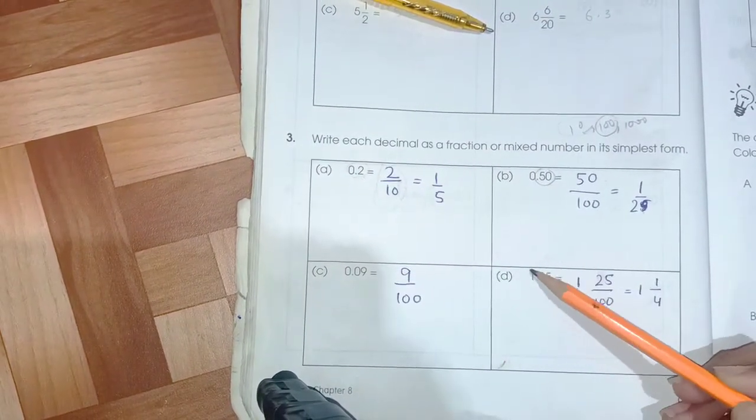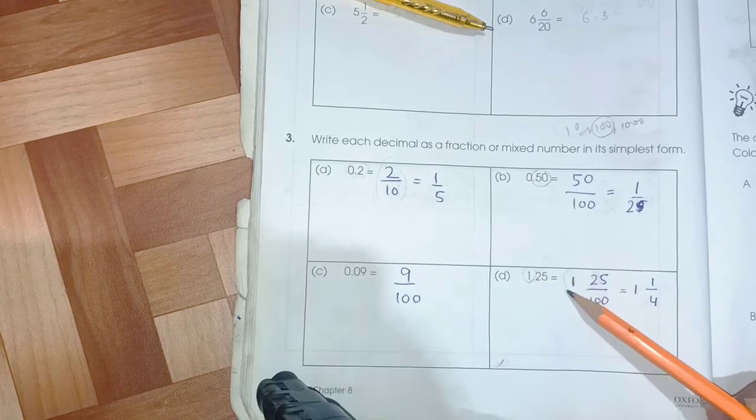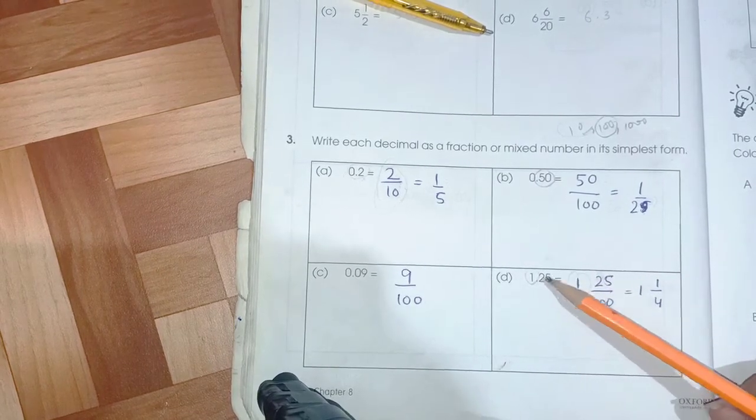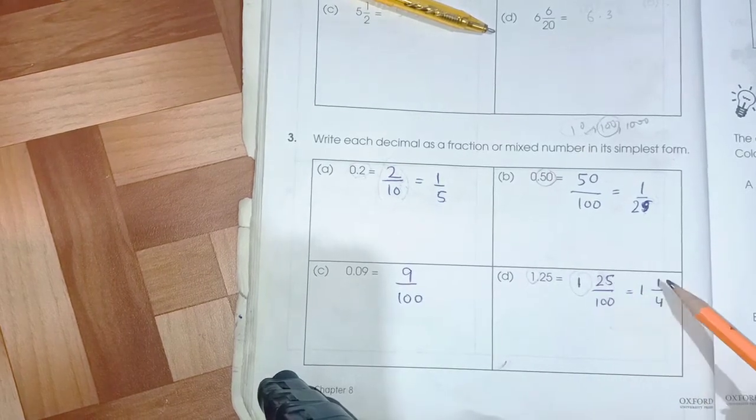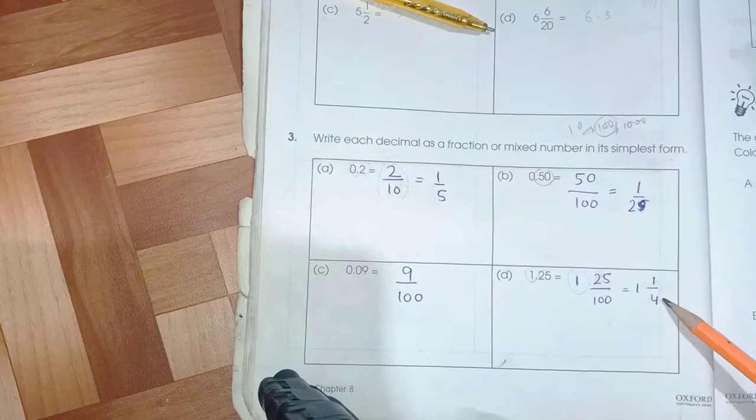Now we have 1.25. We take this 1 as a whole number on the separate side, and then 25/100, because we have one, two, three - three digits. 25 fours is 100, and the whole number will remain the same.